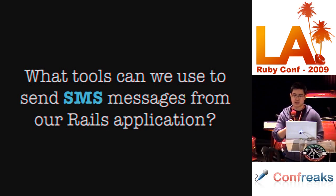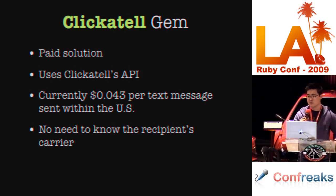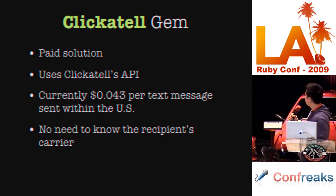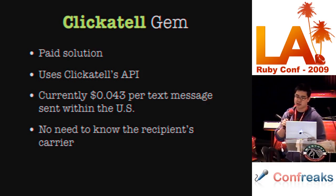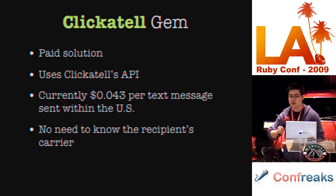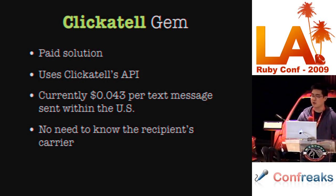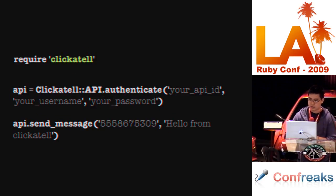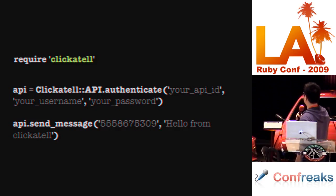What tools can we use to send SMS messages from a Rails app? First off, Clickatell is a pretty popular SMS gateway. It's a paid solution that uses Clickatell's API. Last time I checked, it was about 4 cents per text message within the US, and they support a lot of different countries. You don't need to know the recipient's carrier, which is a nice advantage. Here's a quick example of how to use it: you authenticate, then fire out the message with the phone number and your message.